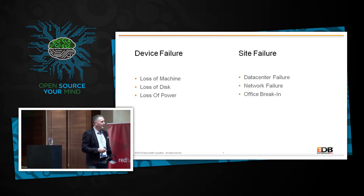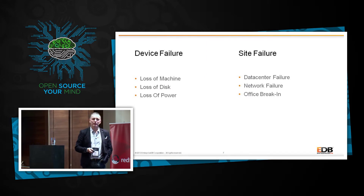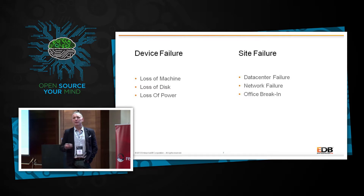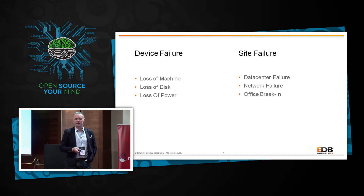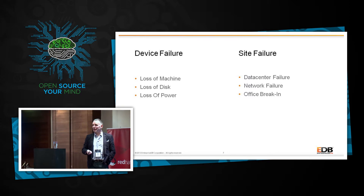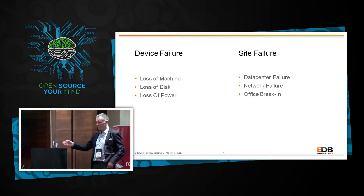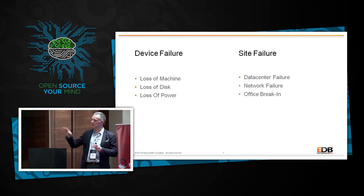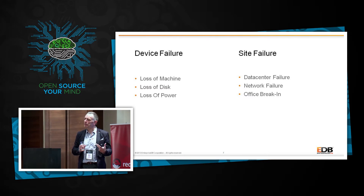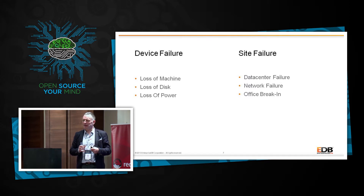Downtime scenarios: device failure — loss of machine, loss of disk, loss of power. They all give us a different solution needed for recovery. A loss of power would be different to a loss of disk, which would be potentially different to a loss of machine. Site failure — there's one that companies never think about: a break-in. When I worked for Oracle, one of our data centers was broken into; they went through the back door and stole quite a few machines. We hadn't planned for that type of outage. We'd planned for a data center failure and a network failure, but when we lost half of the machines, we just hadn't planned for that one.